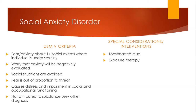Individuals with social anxiety disorder have a lot of difficulty with dating, doing presentations, and having intimate relationships. They often may lack academic achievement and socialization in early childhood. One theory as to why this is caused is that it may be due to low dopamine levels. The main treatment for social anxiety disorder is exposure therapy.